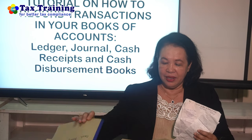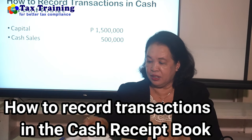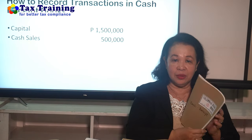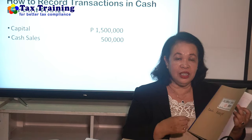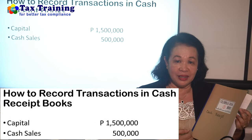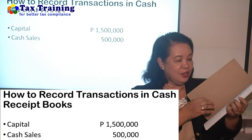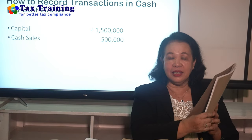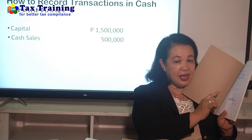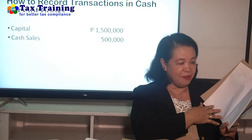We'll start with how to record transactions in the cash receipt book. What is the cash receipt book? In the cash receipt book, we record our sales and the cash we have received. This book has a stamp from the BIR — it is official and is what we will use.